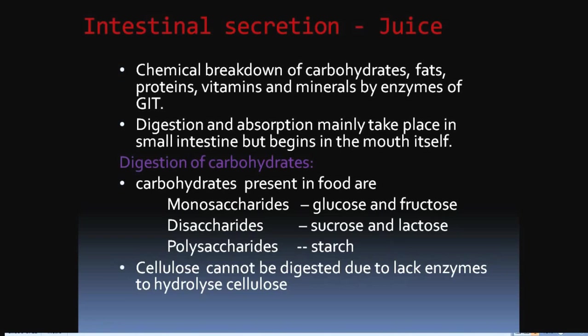Digestion and absorption mainly take place in the small intestine but begin in the mouth itself. Carbohydrates present in food include monosaccharides such as glucose and fructose, disaccharides like sucrose and lactose, and polysaccharides such as starch. Cellulose cannot be digested due to lack of enzymes to hydrolyze it.